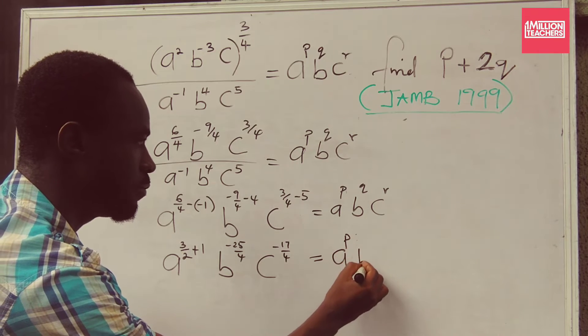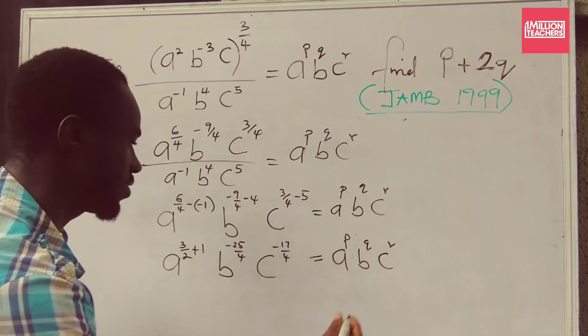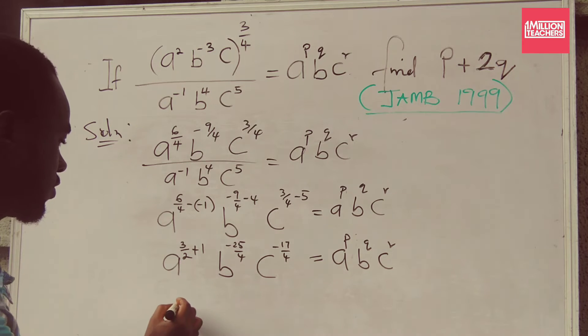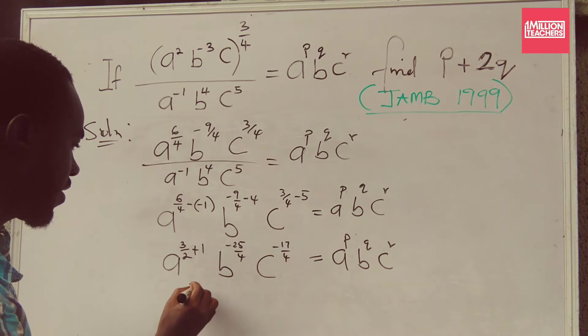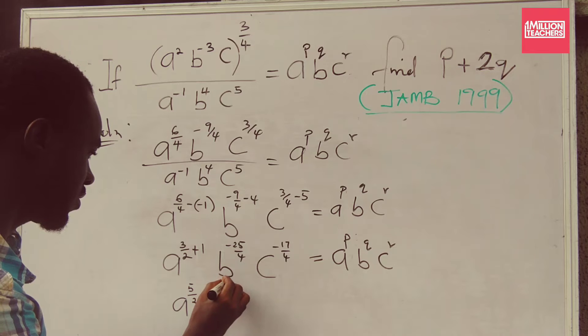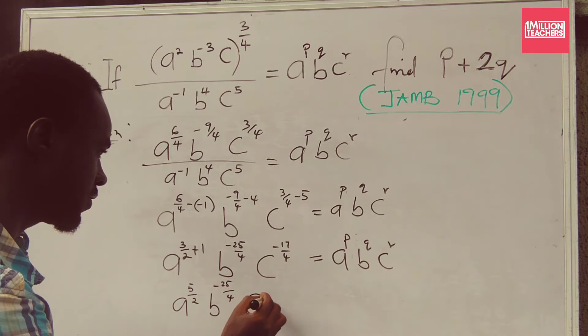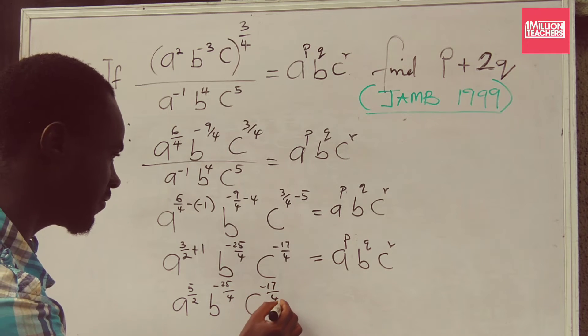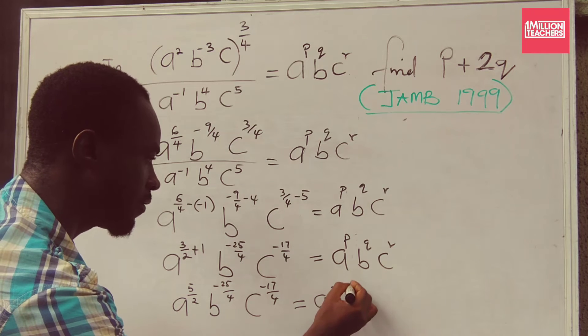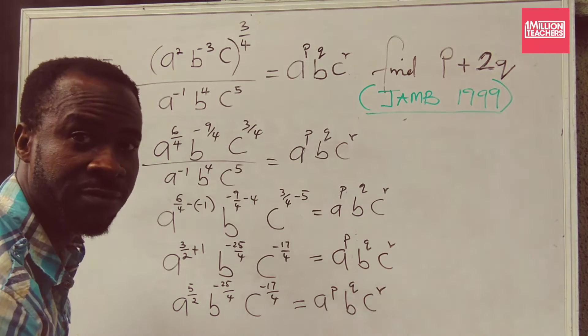And then that gives me A to the power of 3. So if I'm adding these two together, this is going to give me A to the power of 5 over 2, B to the power of minus 25 over 4, C to the power of minus 17 over 4, and then A to the power of P, B to the power of Q, and then C to the power of L.